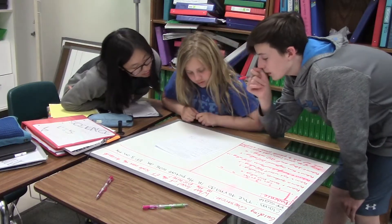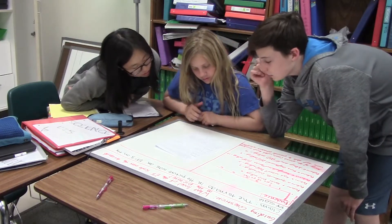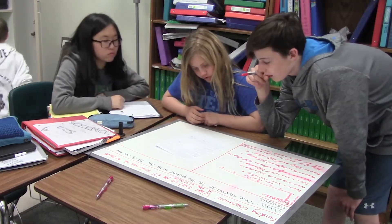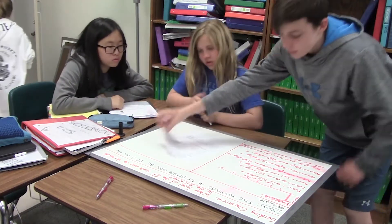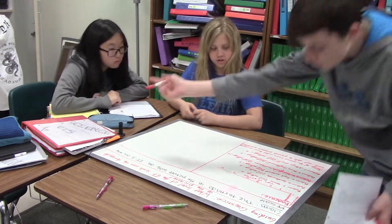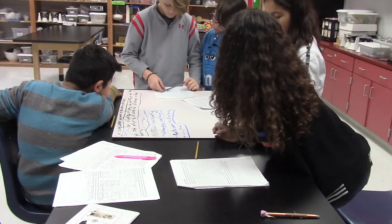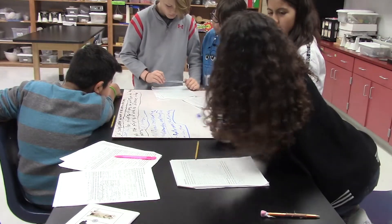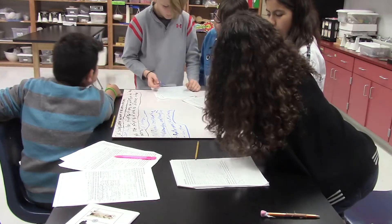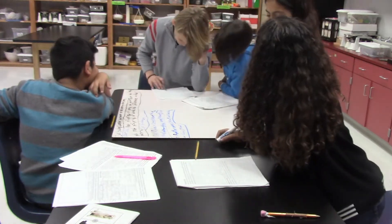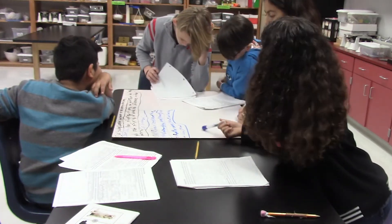At ADI, we consider data those observations or numbers that you collect during the investigation. Evidence is a combination of that data plus an analysis — which is what are you going to do with that data — and then an interpretation, which is what does that data show me. It should also include some sort of chart or graph and a one or two sentence explanation of what's being shown in that chart or graph.